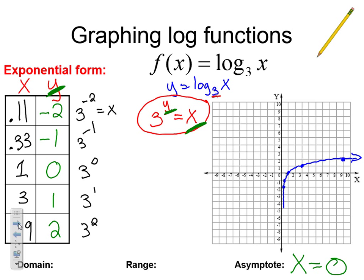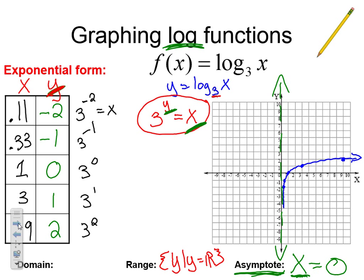We put a dotted vertical line at x equals 0. When working with log functions, our asymptote is x equals something — very important. For our domain and range: since I can pick any y value I want, the range is all real numbers. The domain is restricted by our asymptote, so x such that x is greater than 0 (not equal to).